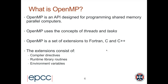So what is OpenMP? OpenMP is an API designed for programming shared memory parallel computers. It embodies the concepts of threads and tasks introduced earlier. OpenMP is a set of extensions to Fortran, C, and C++, consisting of three different things: compiler directives, which make up most of OpenMP; runtime library routines; and environment variables, which are also part of the specification.